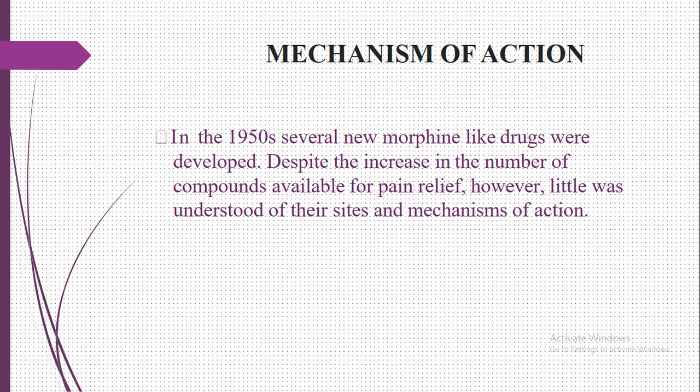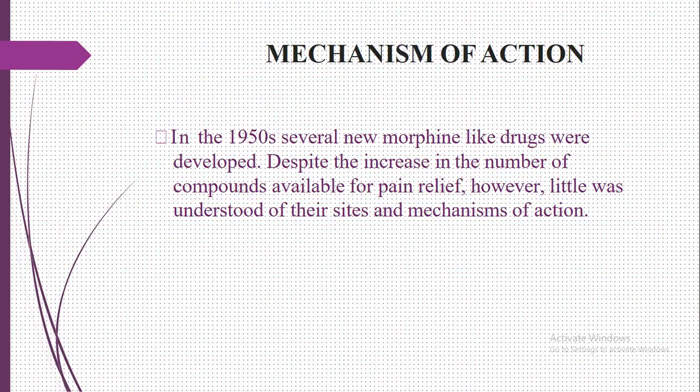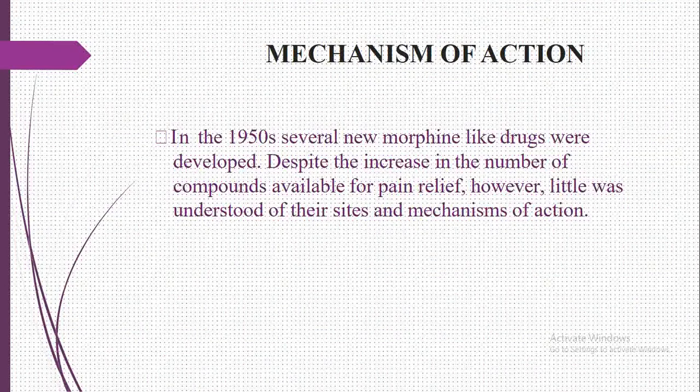The mechanism of action of opiate analgesics: around the 1950s, several new morphine-like drugs were developed. Despite the increasing number of compounds available, it was later understood that they share sites and mechanisms of action — binding to mu, kappa, and delta receptors, as previously discussed.